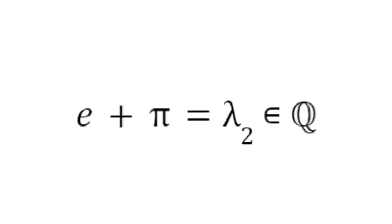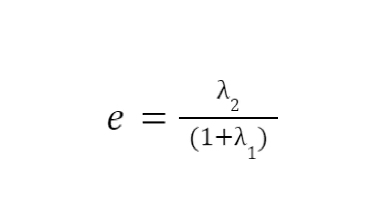Now due to the assumption that e plus pi is rational, we can say that it is equal to some rational number lambda 2. Now, if we combine both of the equations we can conclude that e is equal to lambda 2 over 1 plus lambda 1.